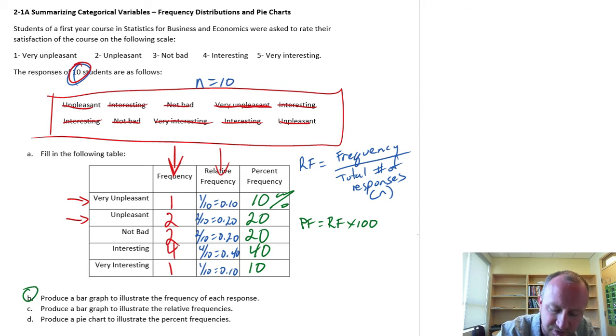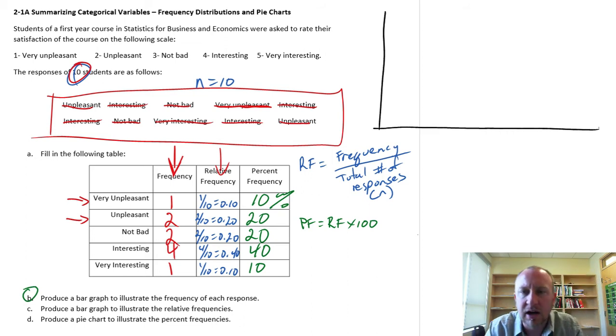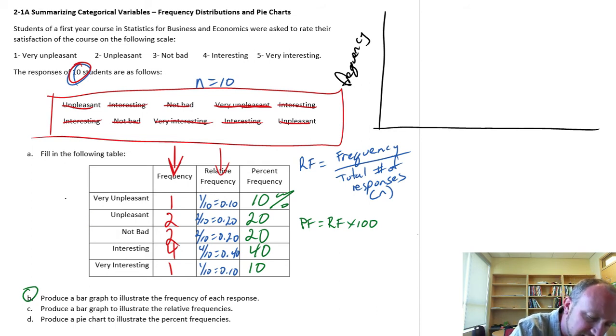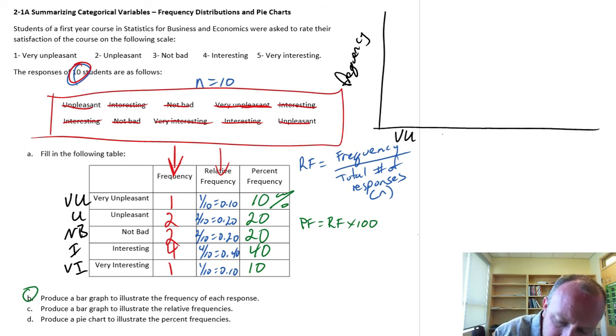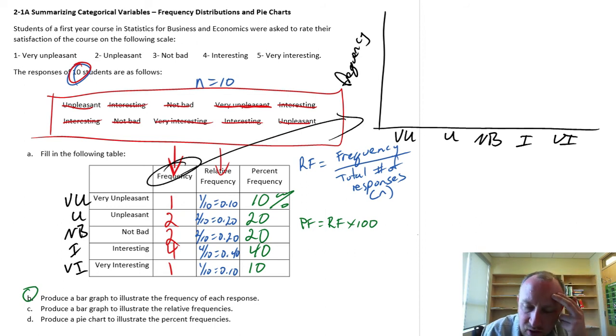I'm going to look at a frequency distribution. Let me draw my x and y axes. On the y-axis, this is the value we're going to be plotting - this is my frequency. On the x-axis, I'm going to put the labels that correspond to each of my categories. I'm going to abbreviate this - very unpleasant, unpleasant, not bad, interesting, and very interesting, just because I have limited space on my graph.